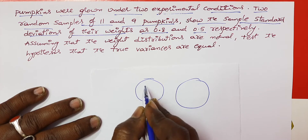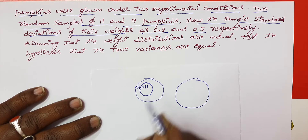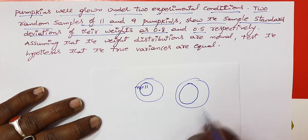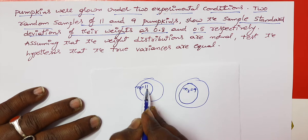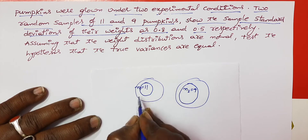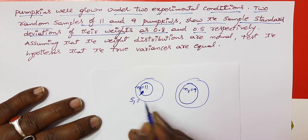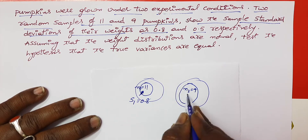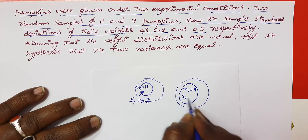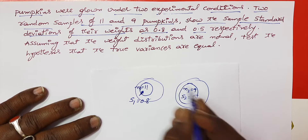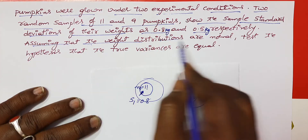In the first experimental condition, you can see one sample of 11 pumpkins — this is n1. In the second condition, you can see 9 pumpkins — this is n2. S1 is 0.8 and S2 is 0.5. Assuming that the weight distributions are normal.